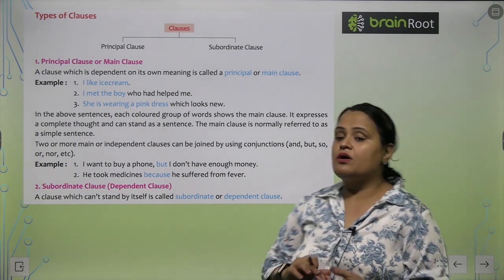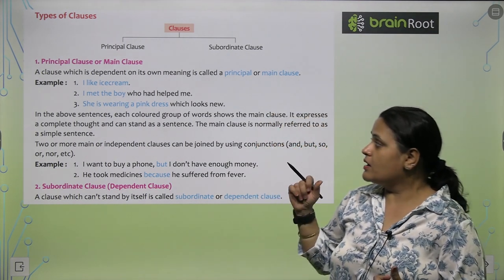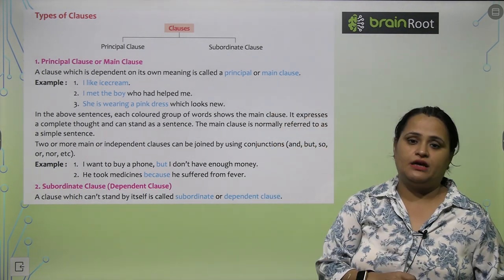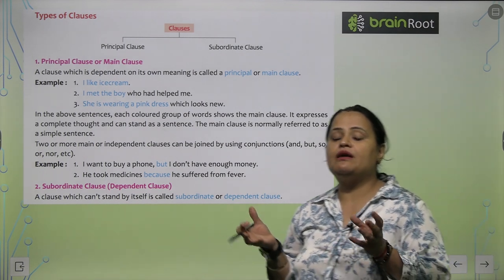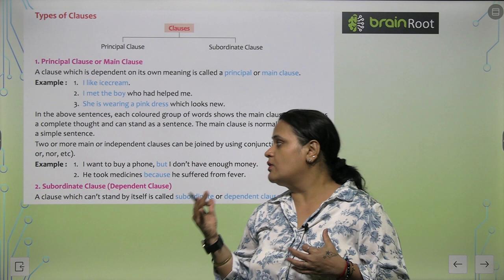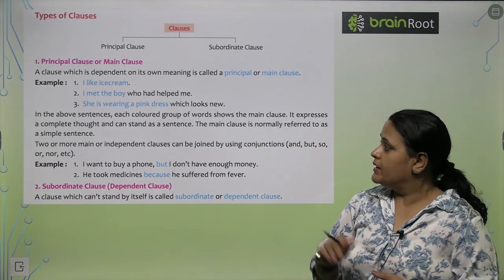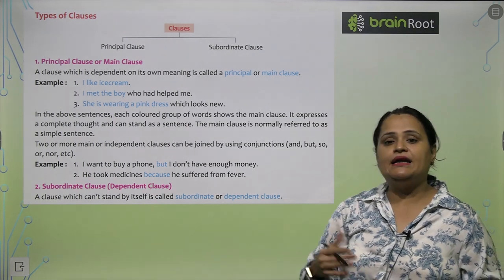Woh kya hota hai? A clause which is dependent on its own meaning. Joh apne hii meaning peh dependent ho is called principle clause and main clause. So, I like ice cream. I met the boy who had helped me. She is wearing a pink dress which looks new.